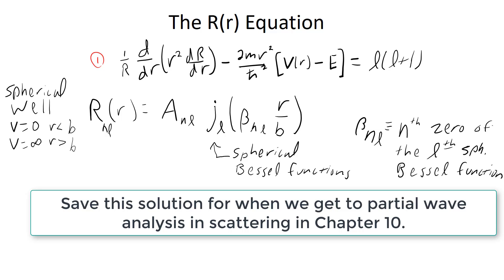This beta sub nl is the nth zero of the Bessel functions. The Bessel functions oscillate up and down to positive and negative values crossing zero an infinite number of times. The value of those zero crossings is what beta sub nl represents, so we end up getting an infinite number of solutions, r sub nl. And it's quantized, where n serves as a principal quantum number.